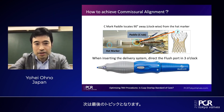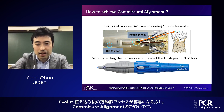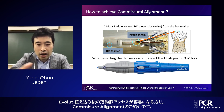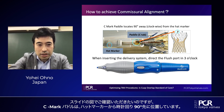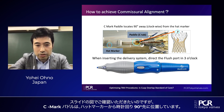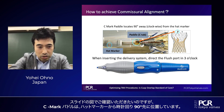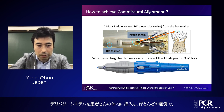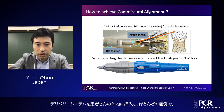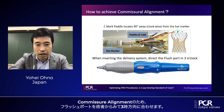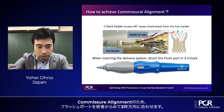Our next and final topic is commissure alignment. This concept facilitates easier coronary access after Evolut implantation. Since the C-mark paddle is located 90 degrees clockwise from the head marker, to achieve commissure alignment in most cases, we direct the flush port in the three o'clock position away from the operator when inserting the delivery catheter.